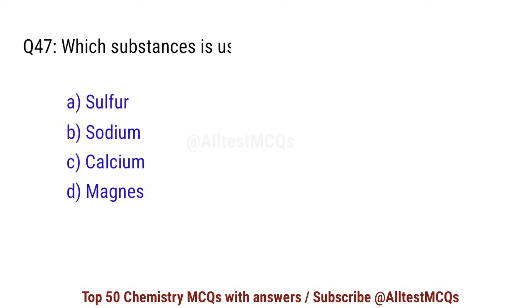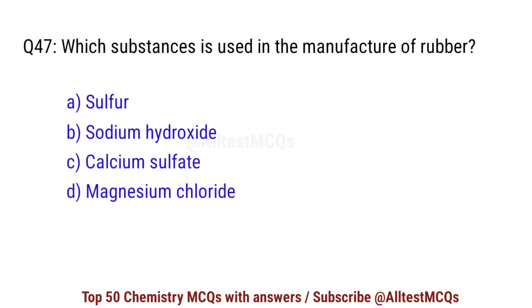Question number 47. Which substance is used in the manufacture of rubber? Correct option is A: sulfur.